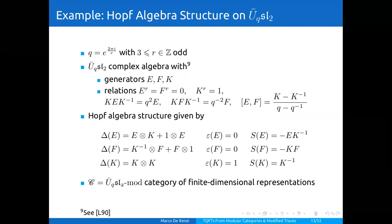I should mention that I'm telling everything for Ū_q(SL₂), but there's nothing special about this quantum group except that it's the simplest example we can make. This recipe for extracting a modular category from the representation theory of this quantum group also works for more general finite-dimensional ribbon Hopf algebras.